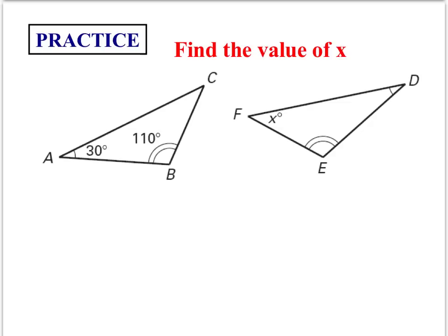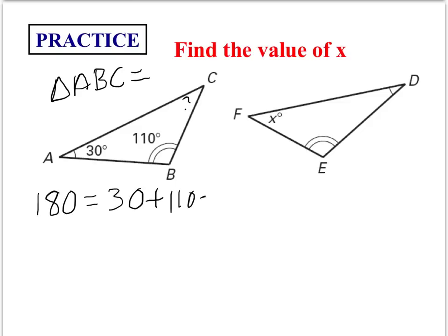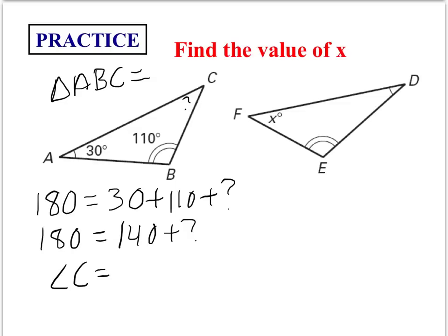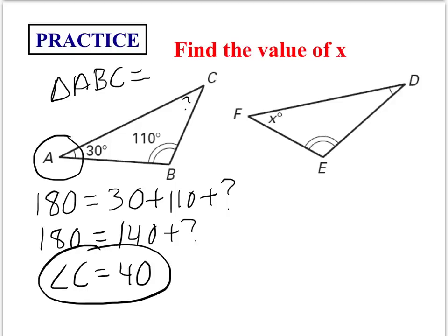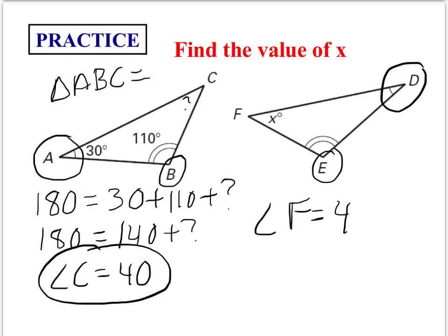For triangle ABC, remember that interior angles must add up to 180 degrees. We have 30 plus 110, which gives 140, so the unknown angle C equals 40 degrees. Since angle A is congruent to angle D and angle B is congruent to angle E, by the Third Angles Theorem, angle F must also be 40 degrees.